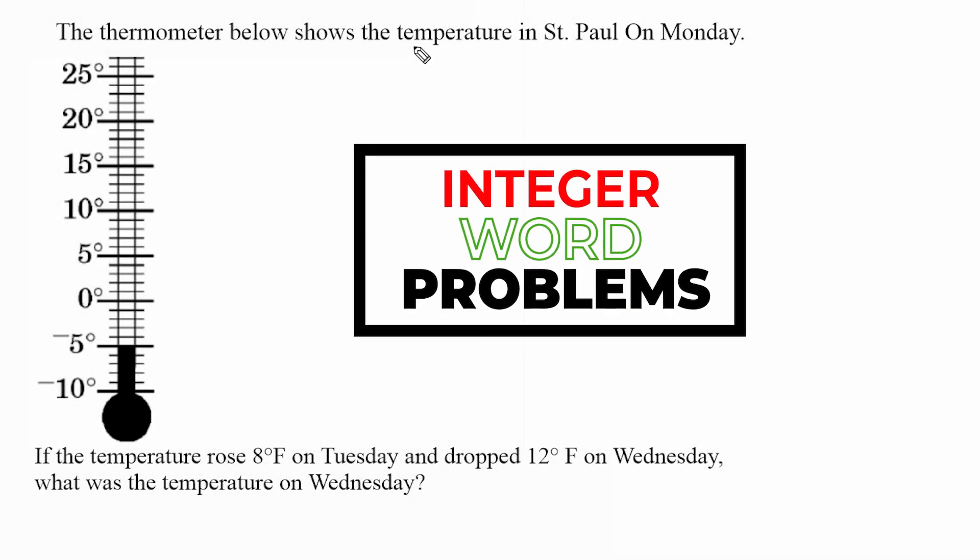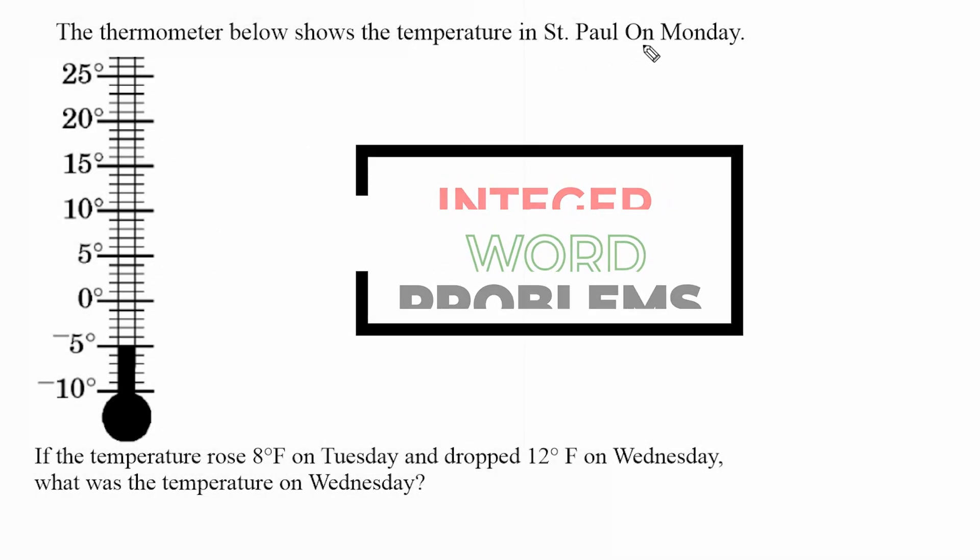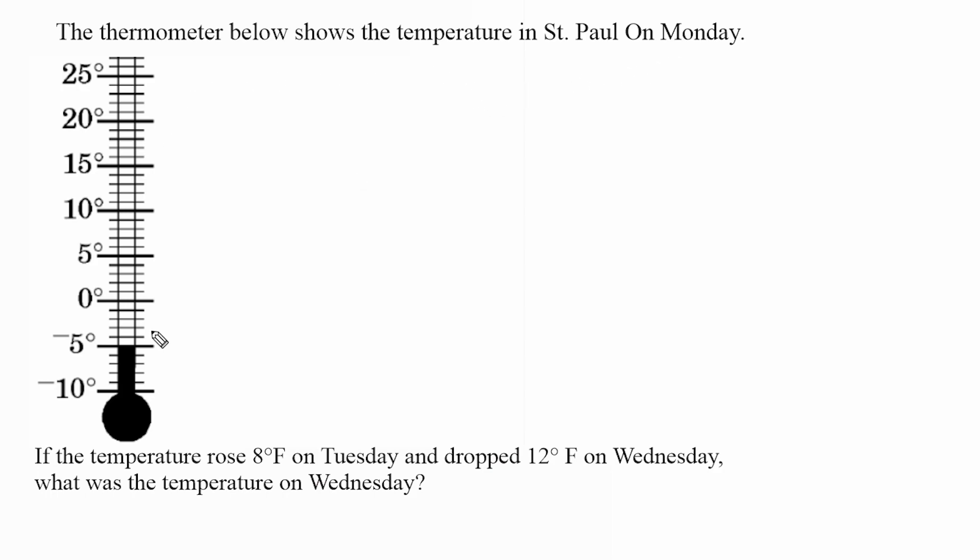Alright, so we have a thermometer right here that shows the temperature in St. Paul on Monday. Looking at this thermometer, we can see that the mercury stops right at negative five. So the temperature on Monday in St. Paul is negative five degrees, that is our starting point.